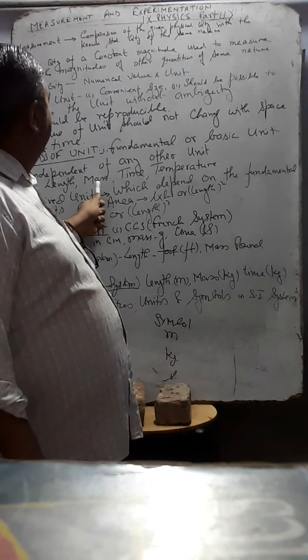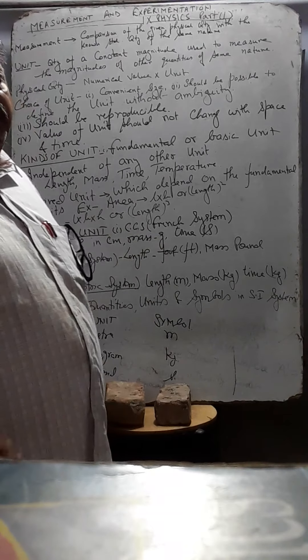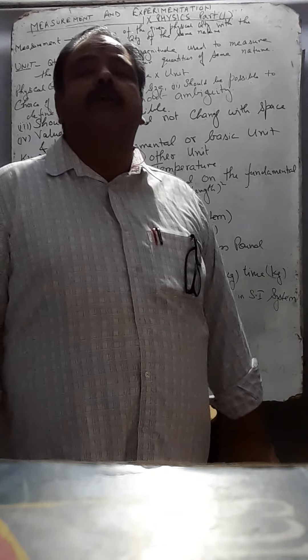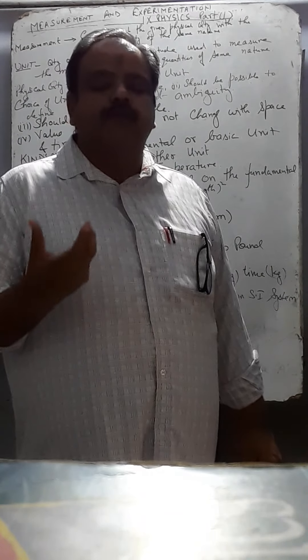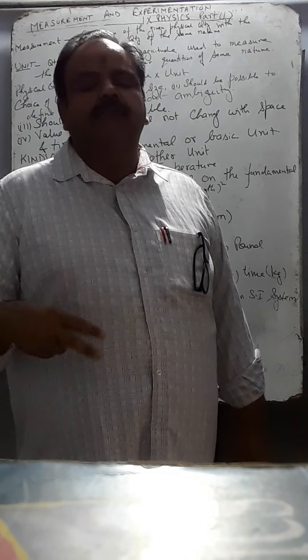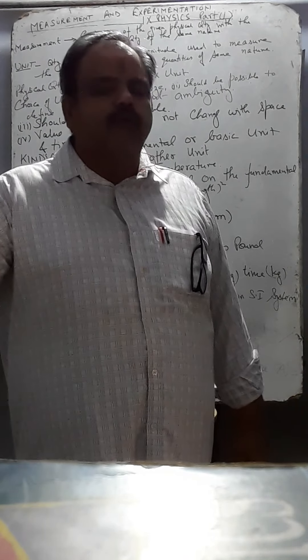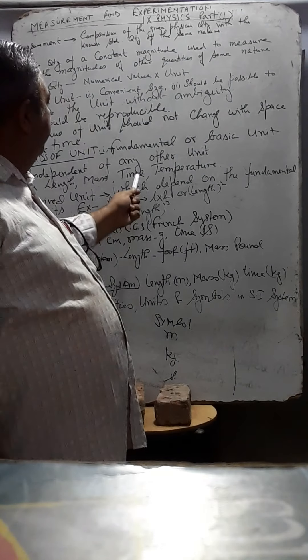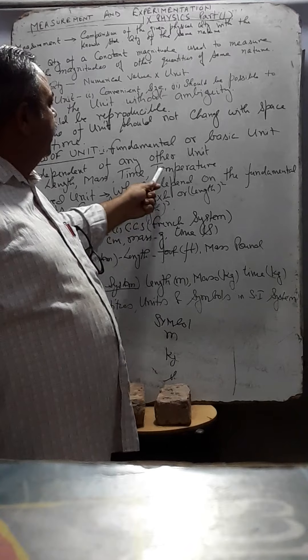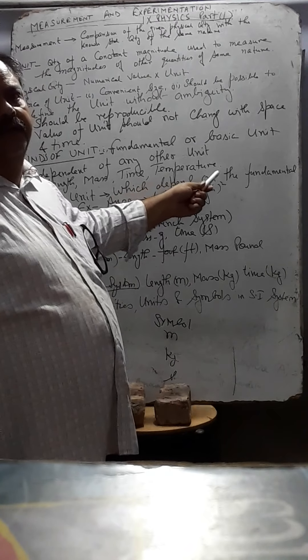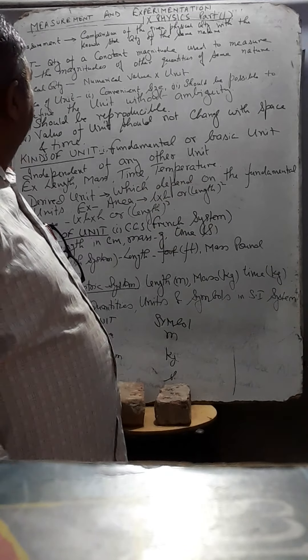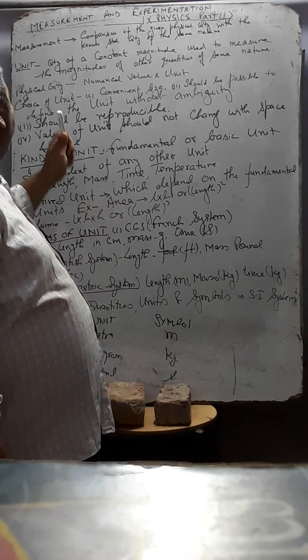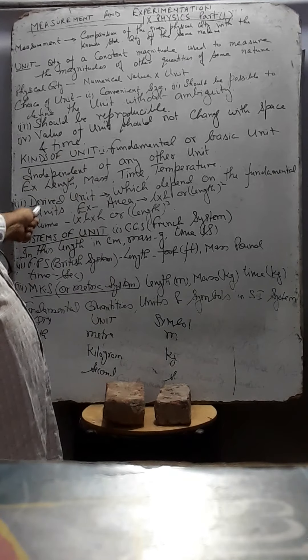Second is mass. Mass does not vary from place to place. Mass of the body is same on the earth as well as same on the moon. So, it does not vary. So, it is fundamental. Time does not vary. Temperature does not vary with time, space or time.